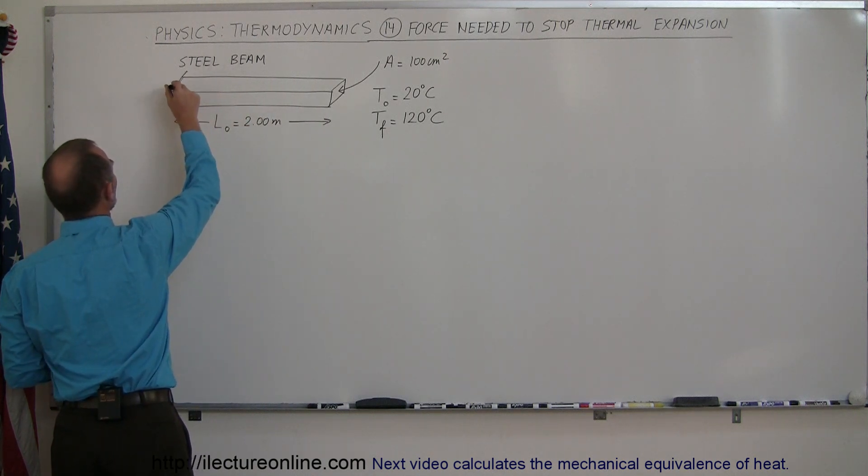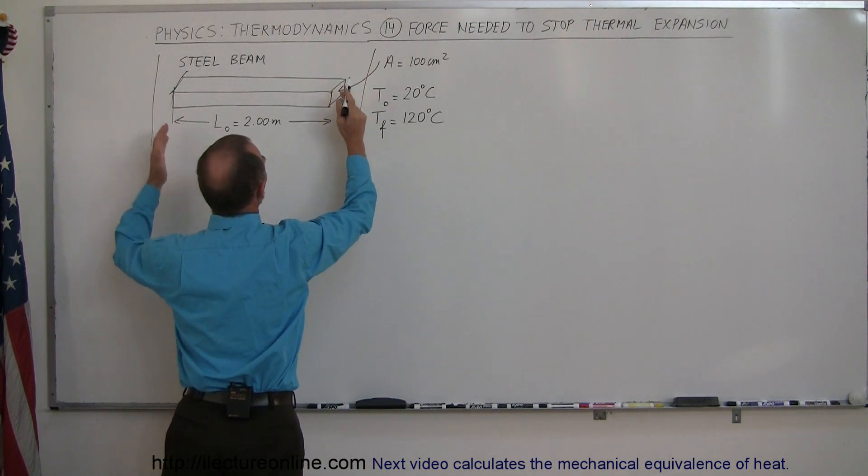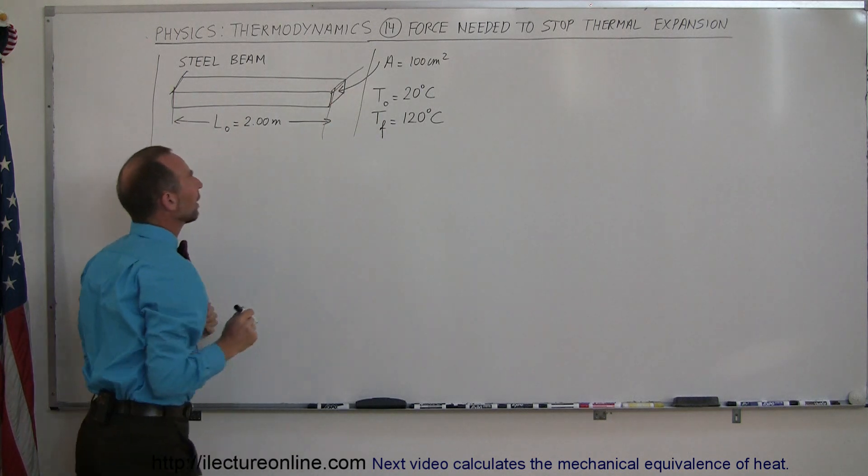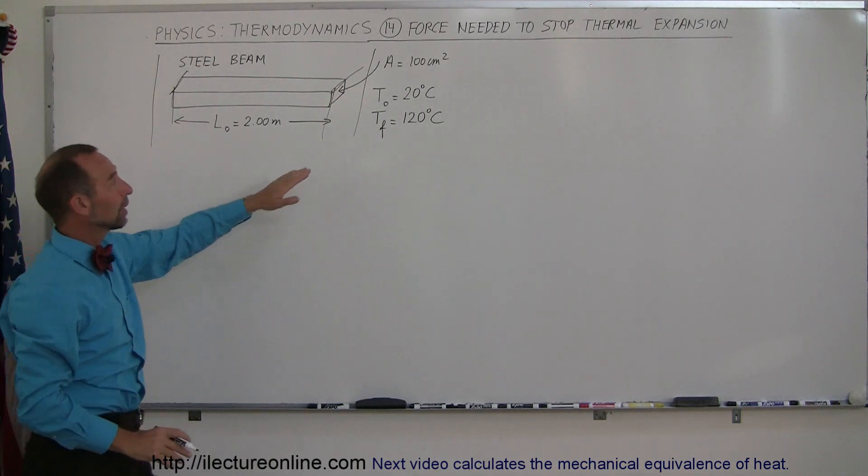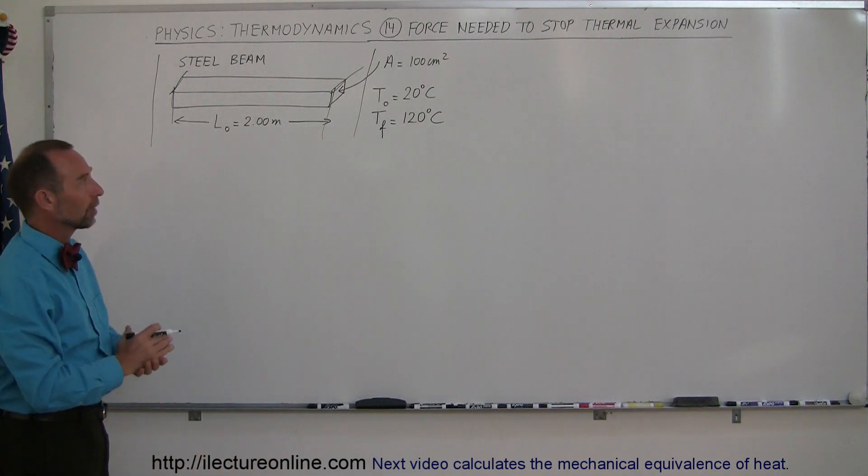We have it between two structures, so there's a wall over here and a wall over there, holding the beam in so that the beam cannot expand. Let's say we heat it from 20 degrees centigrade to 120 degrees centigrade, so it goes through a 100 degree centigrade temperature change.